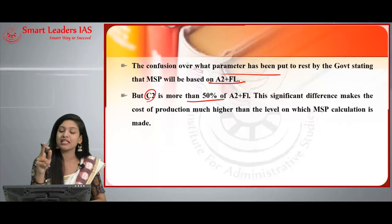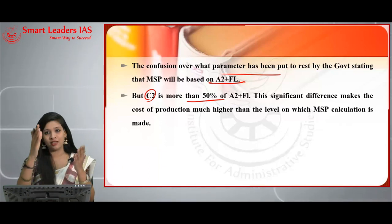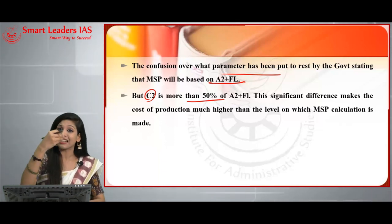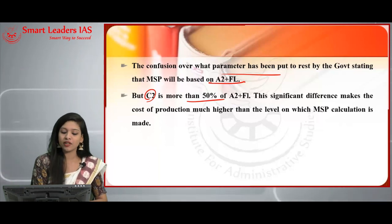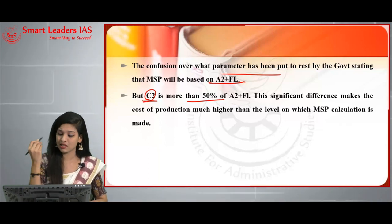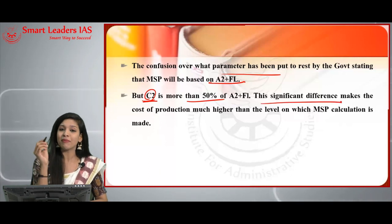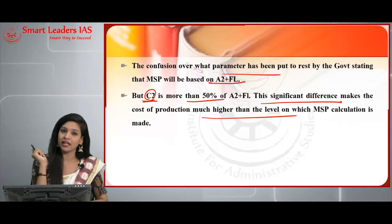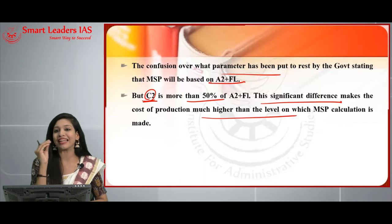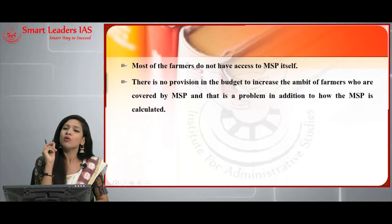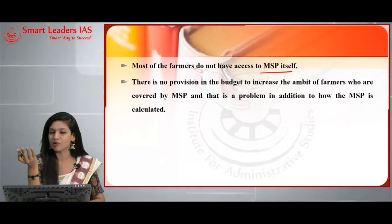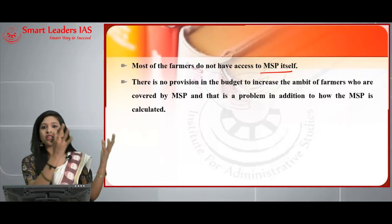The significant difference between C2 and A2+FL makes the actual cost of production much higher than the level on which the MSP calculation is made — this is one of the most important issues with MSP. The next issue is that most farmers do not have access to MSP itself; some farmers don't even know what MSP is, indicating a serious lack of awareness among farmers.